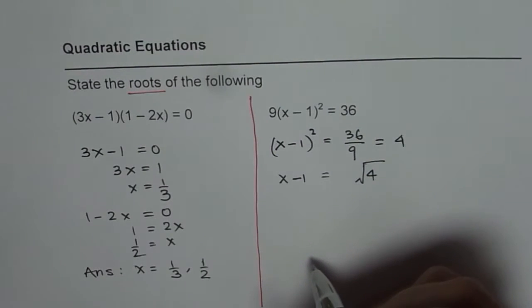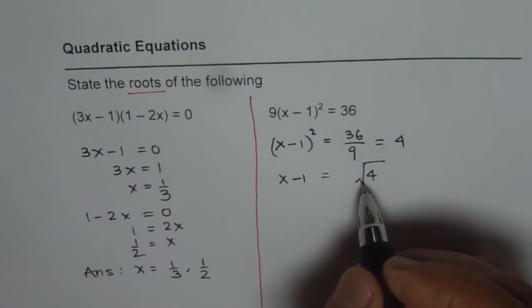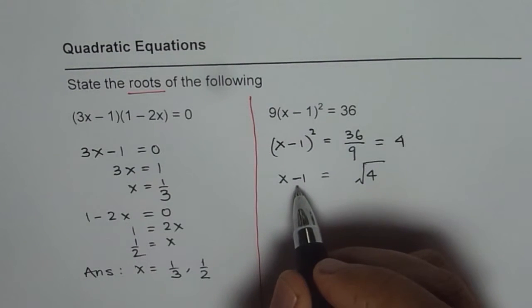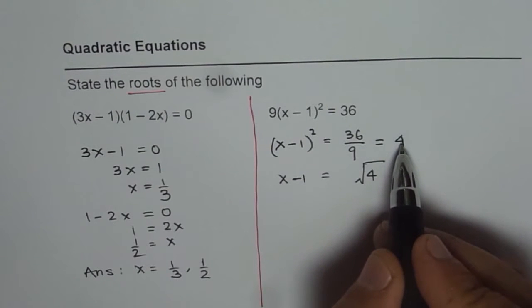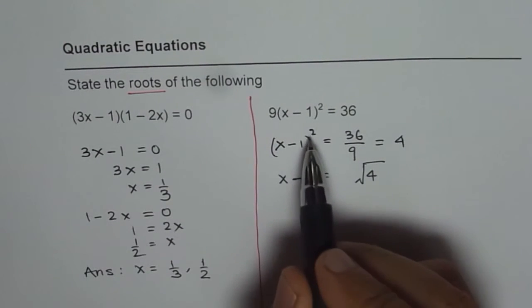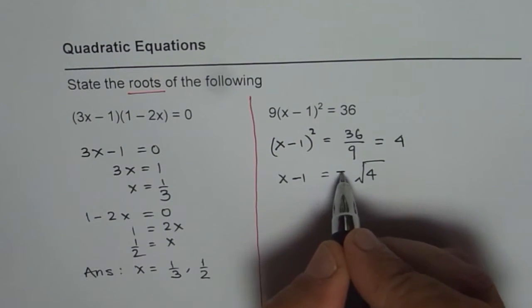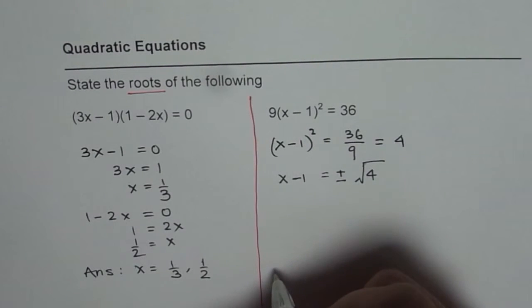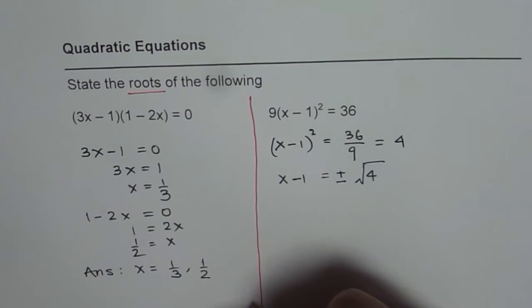Remember one thing: the square of positive 2 and square of negative 2 both can give me 4. Do you understand? Therefore, whenever you square root, don't forget to write plus and minus. These are two numbers which will give you the same result.